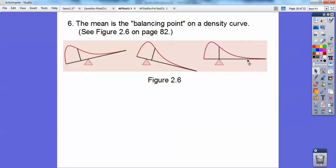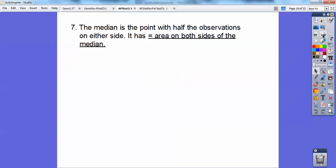And then the mean is the balancing point on a density curve. If this mean is this bar right here, here's the mean, it's not on the balancing point. When it's on the balancing point, that's the mean. It's just where it balances. Don't get too tied up into that. You'll never see it again. But it is the balancing point on your density curve.